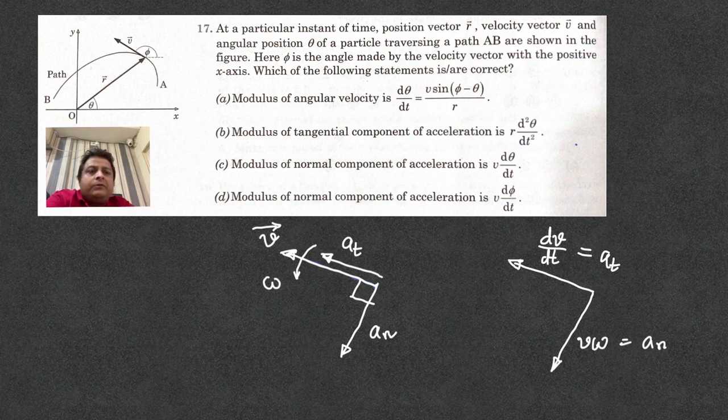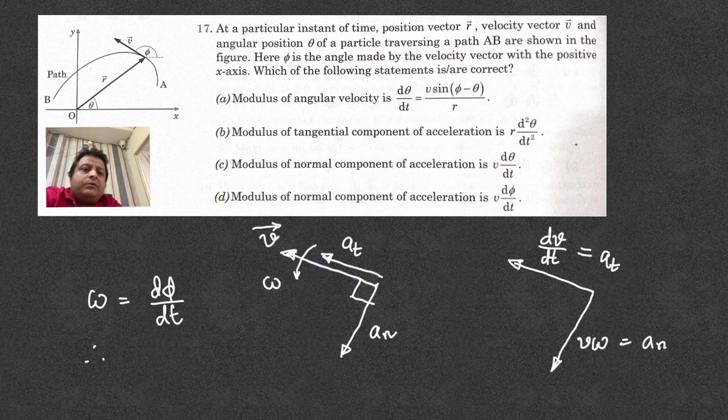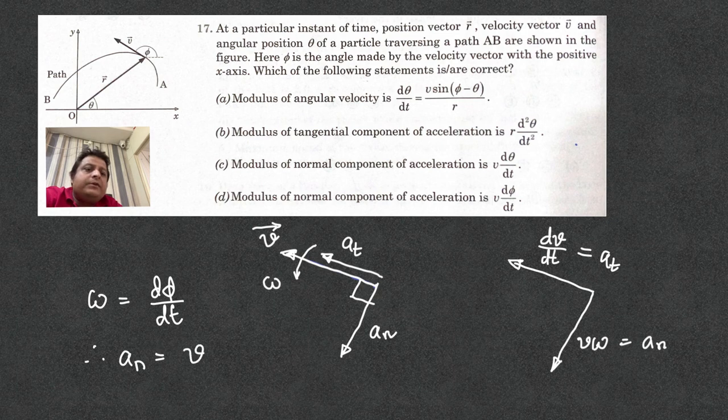So, actually, what is this omega? This omega is equal to dv dt. So, therefore, the normal acceleration happens to be v omega. That means v times dv dt.